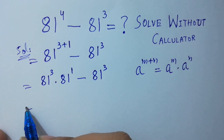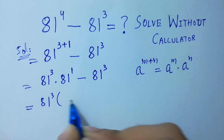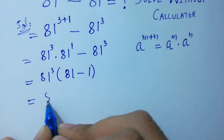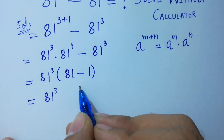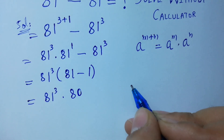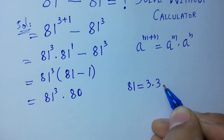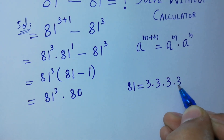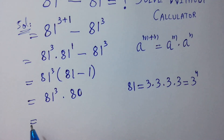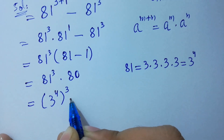Next, 81 cubed is common, so we factor it out: 81 cubed times (81 minus 1), which equals 81 cubed times 80. As we know, 81 equals 3 times 3 is 9, times 3 is 27, times 3 is 81, so 81 equals 3 to the power 4. Therefore this becomes 3 to the power 4, cubed, times 80.